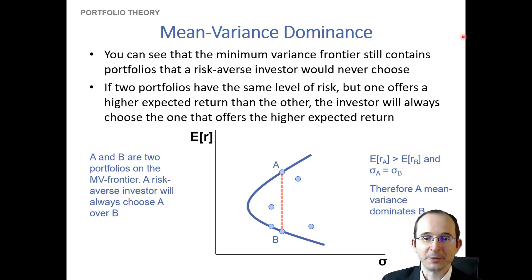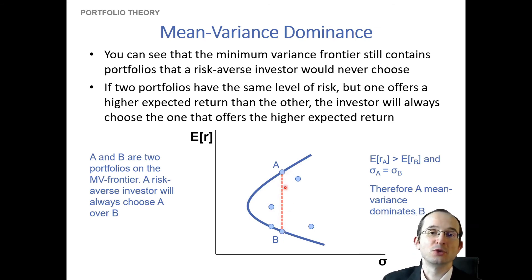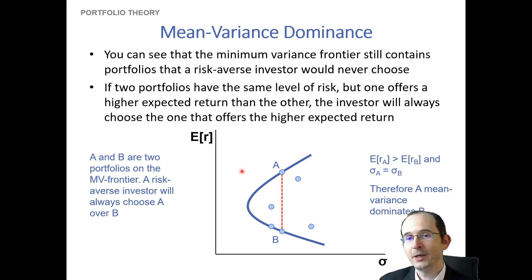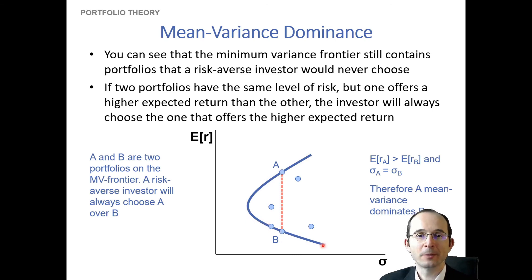One thing we can learn from the minimum variance frontier is that some portfolios are going to dominate others. For a risk-averse investor considering portfolio A versus B, if both have the same risk on the horizontal axis but portfolio A has a much higher return on the vertical axis, you would obviously choose A. We can make the same argument for any portfolio on the frontier above the minimum variance portfolio — it dominates any portfolio below the minimum variance portfolio.